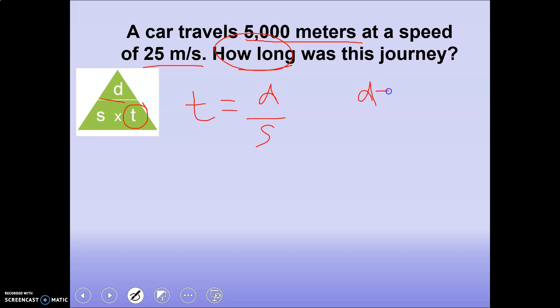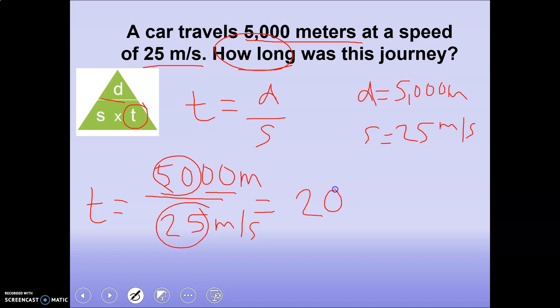We know that the distance was 5,000 meters. We know that the speed was 25 meters per second. So we should have time equals the distance was 5,000 divided by the speed of 25. Remember this was 5,000 meters and 25 meters per second. So if we do 50 divided by 25, we get 2. Add those zeros back in, we get 200.